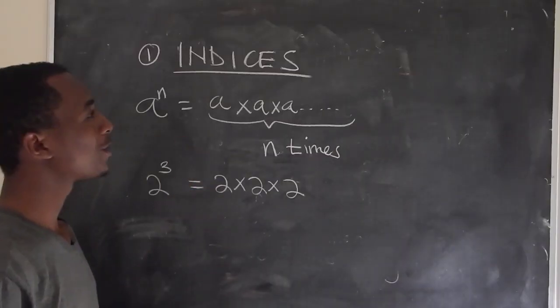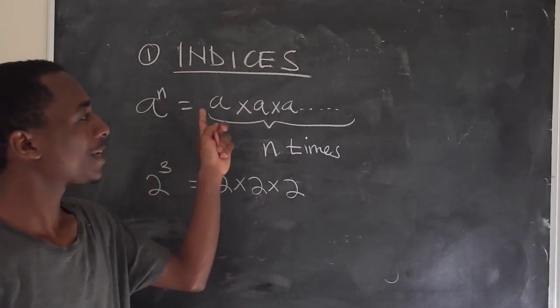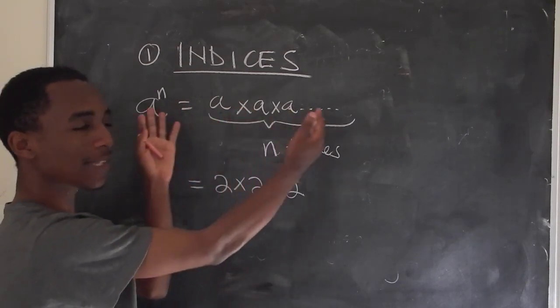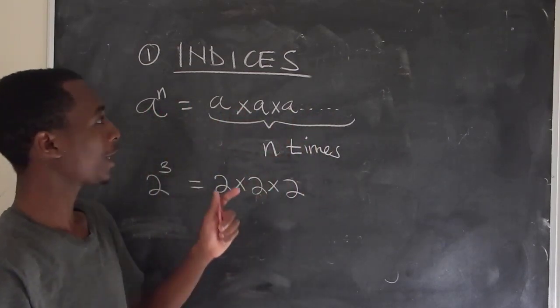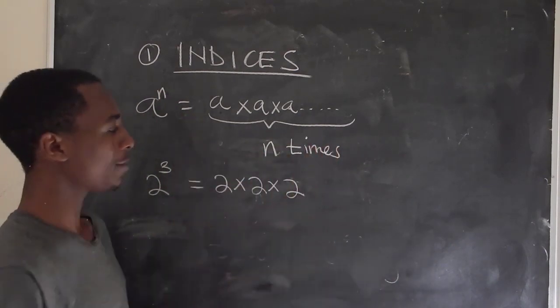Number 1 is about indices of powers. Now if you have a number a to the power n, that's the same as a multiplied by itself n number of times. So a to the power n means a times a times a, n times.